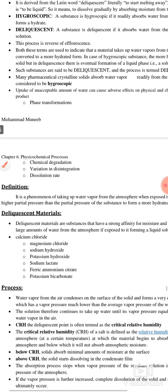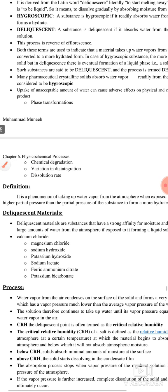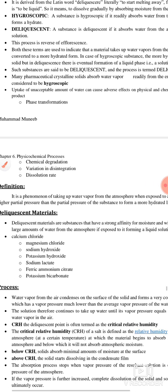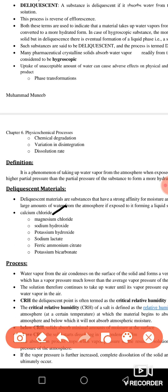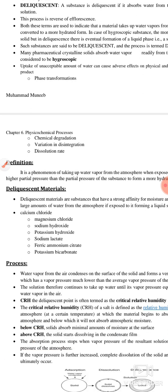The definition of deliquescence is: it is a process of taking up water vapors from the exposed atmosphere and converting into a hydrated liquid phase. Deliquescent materials are substances which have strong affinity to absorb moisture from the atmosphere whenever exposed to it. Examples include calcium chloride, magnesium chloride, sodium hydroxide, potassium hydroxide, sodium lactate, ferric and aluminium citrate, and potassium bicarbonate.